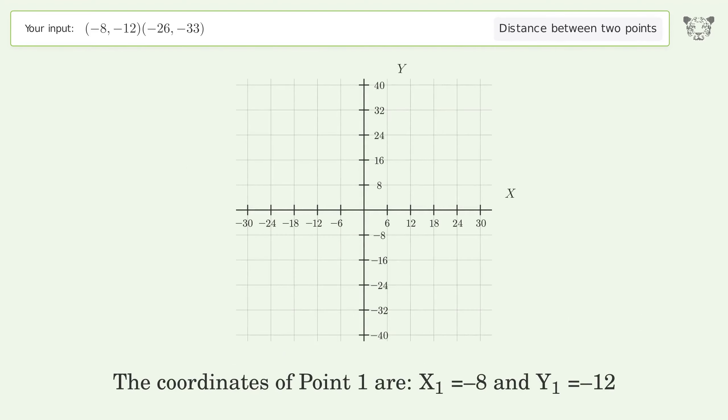The coordinates of Point 1 are x1 equals negative 8 and y1 equals negative 12. The coordinates of Point 2 are x2 equals negative 26 and y2 equals negative 33.